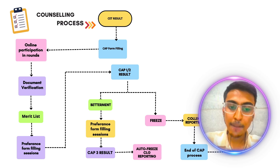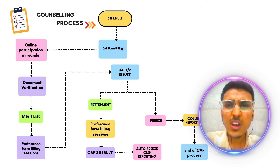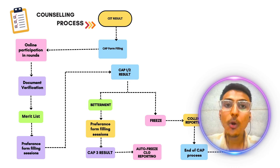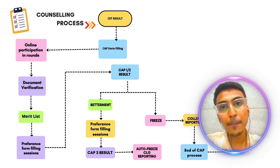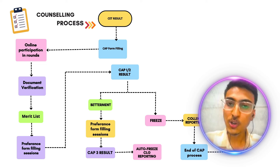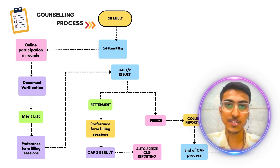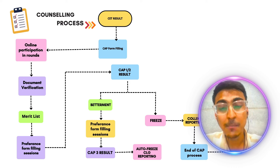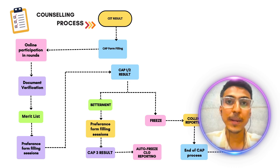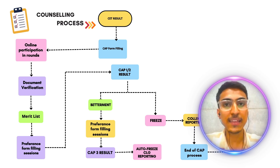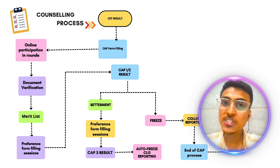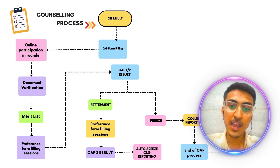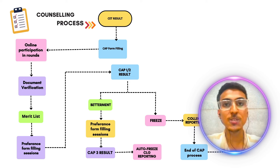अब समझ लो — by chance आपने CAP 2 के preference form में कोई गलत choice fill कर दी, आपने नीचे का college ऊपर डाल दिया और वो नीचे का college आपको लग गया, तो वहाँ पे आपको auto freeze हो जाएगा। फिर वहाँ पे government भी कुछ नहीं कर सकती — यह चीज़ याद रखना। Auto freeze मतलब आपको उसी college में admission लेना है। तो अपना preference form please ध्यान से बनाना। अगर नहीं आता तो कोई counselor की मदद लो। हम भी आपको one-on-one paid counseling provide करते हैं जिसमें हम आपका live one-on-one meet लेंगे — form एक भी mistake ना हो।